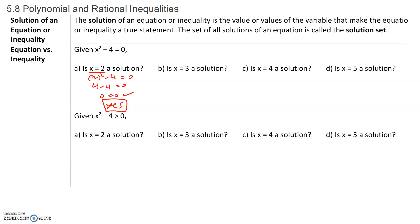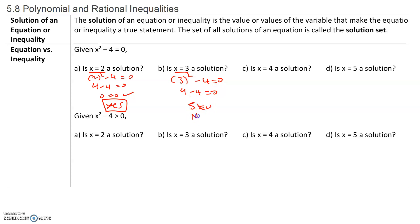Let's check, is 3 a solution? To check if x equals 3 is a solution, we plug it in. We have 3 squared minus 4, which is going to be 9 minus 4. So 5 is not equal to 0. Therefore, this is not a solution.